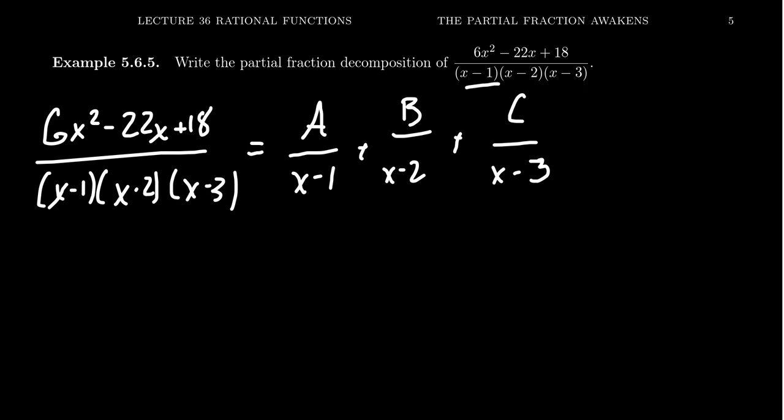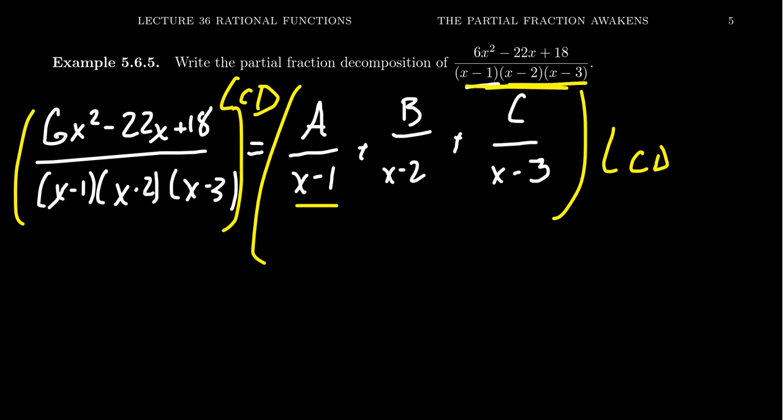Now we have to clear the denominator. So we're going to multiply both sides of the equation by the LCD. The LCD is just the denominator of the original fraction here. Because if you take x minus 1, x minus 2, and x minus 3, the least common denominator is that cowboy pizza. It's the product of all these things.